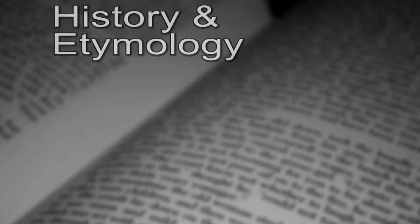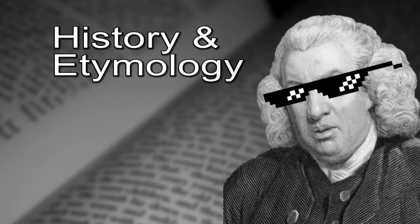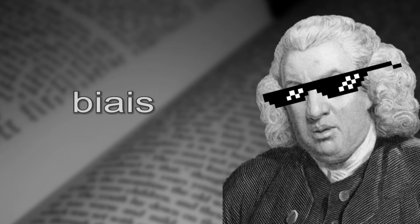History and Etymology. In the 14th century, bias entered the English language as an adjective describing a slant or oblique angle. This usage came from Old French, biais. The exact origin of this word is unknown, but it has cognates in many other European languages, including Catalan and Italian.